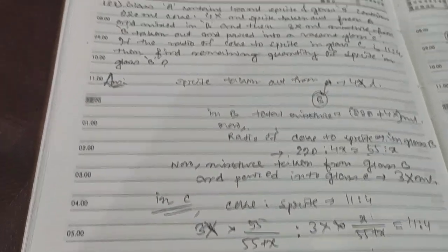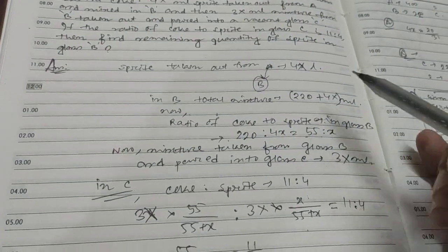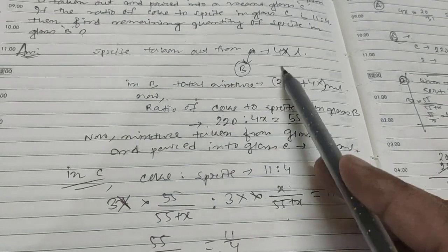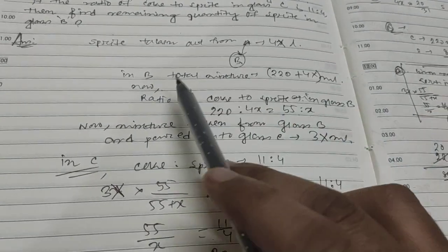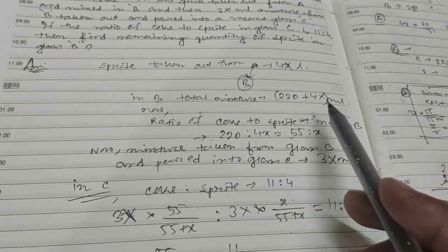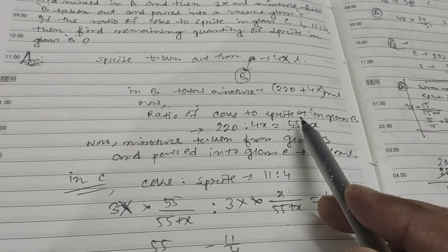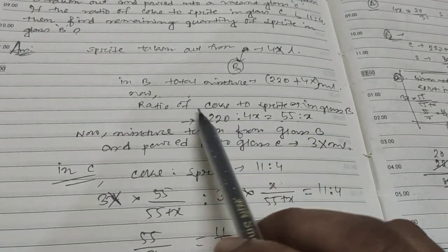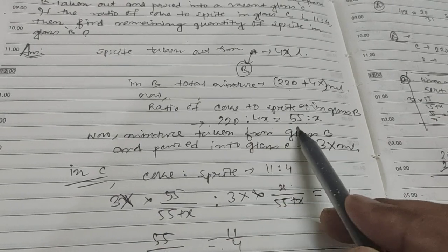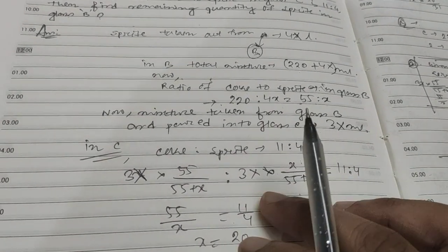This is the question and solution. Sprite taken out from A is 4x liter and put into B. So in B, total mixture is now 220 ml of coke plus 4x sprite. Now coke to sprite in glass B is 220:4x, which means 55:x.